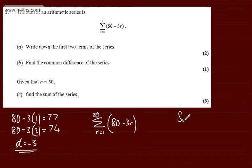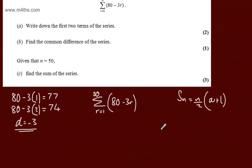I'm going to use the sum of n terms is equal to n over 2 times a plus l, where a is the first term and l is the last term. We already have a, which is the first term and that's 77. We have n, which is going to be 50, and all we need to do is find l.